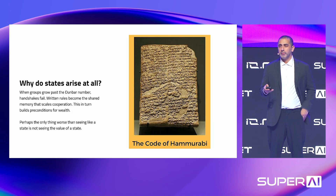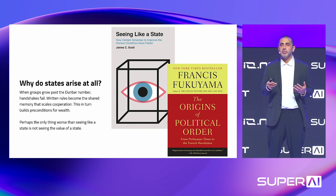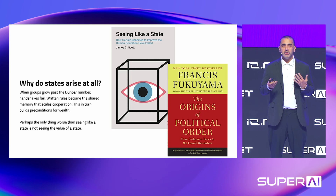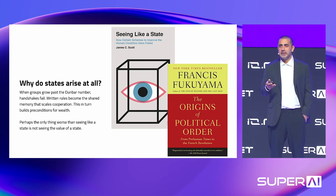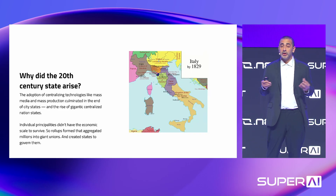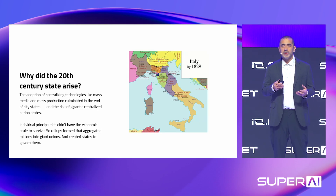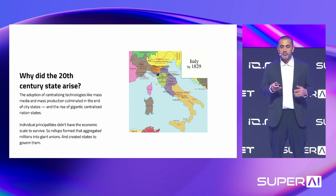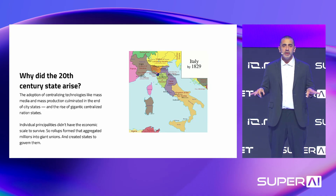There are a lot of people who have been critical of the state — there's a great book called Seeing Like a State. But in some ways, even worse than seeing like a state is not seeing the value of a state. Fukuyama's Origins of Political Order talks about how various tribes went through different paths to build something like the modern state. Essentially, you had all these little city-states that grouped together because they formed unions — just like the United Kingdom, Germany, France, Italy — because individual principalities couldn't survive on their own. They used legal codes to integrate and unify disparate peoples into one political entity.